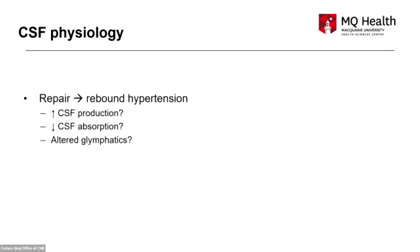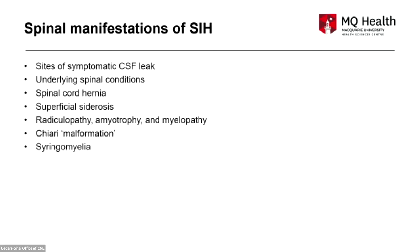There might also be perturbations of physiology relevant to rebound hypertension: if we better understood CSF productive and absorptive mechanisms, and the potential alteration of glymphatics from spinal CSF leak, that might help us understand why some patients develop rebound intracranial hypertension.